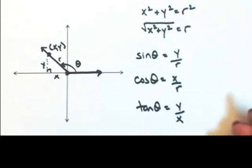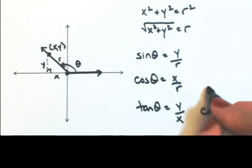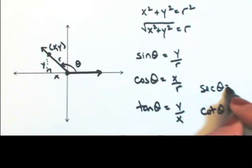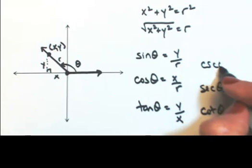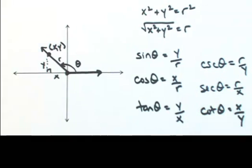Once you have those three, just take the reciprocals, so then the cotangent of theta is x over y, secant of theta is r over x, and then the cosecant of theta is r over y.